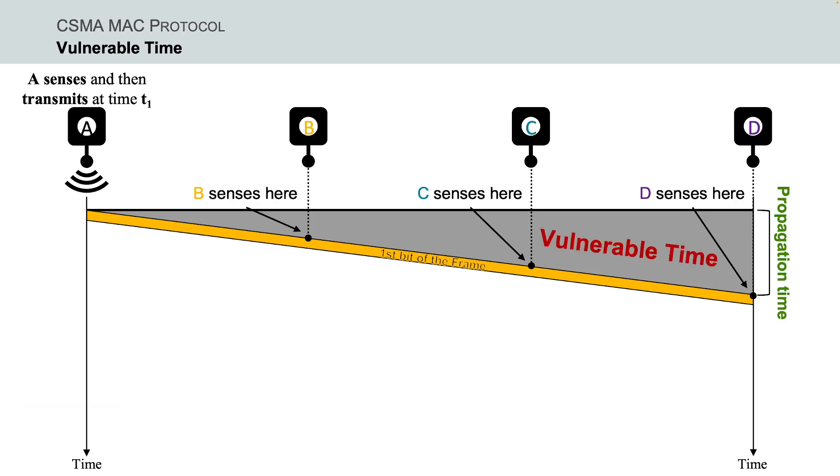Therefore, in CSMA this grey area which is equal to the propagation time is actually the vulnerable area in time and space.